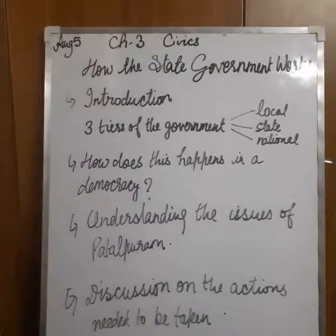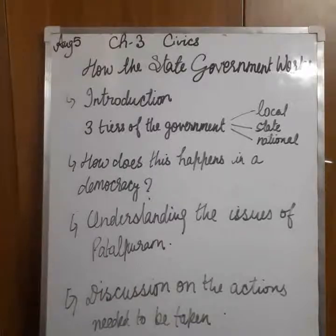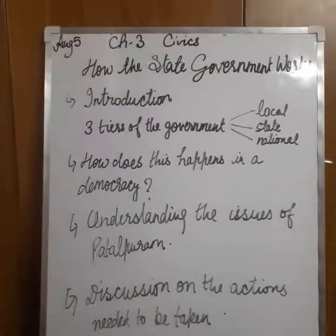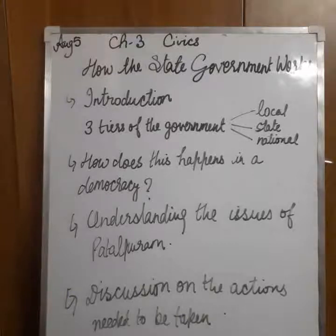In this lesson we will also understand how the Chief Ministers and ministers are selected. How do MLAs become ministers and chief ministers? The political party whose MLAs have won more than half the number of constituencies in a state is said to be in a majority. The political party that has the majority is called the ruling party, and all the other members are called the opposition.